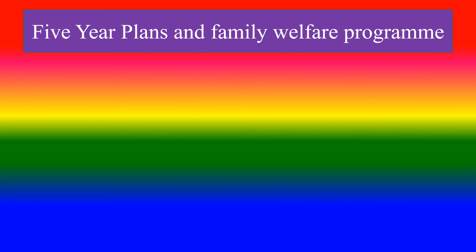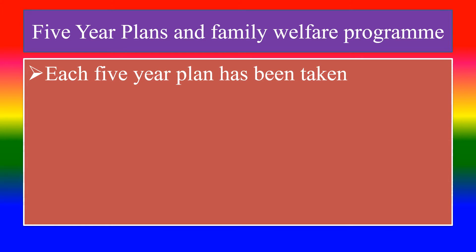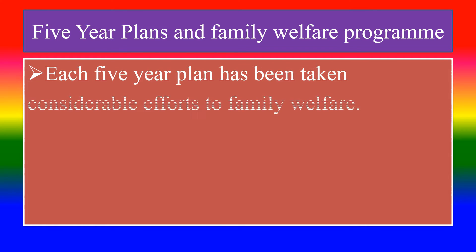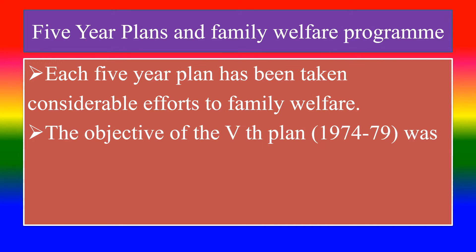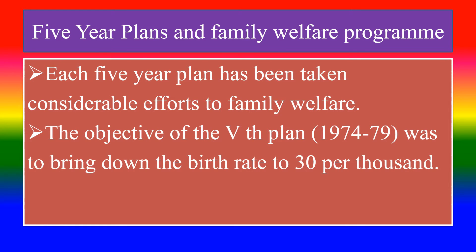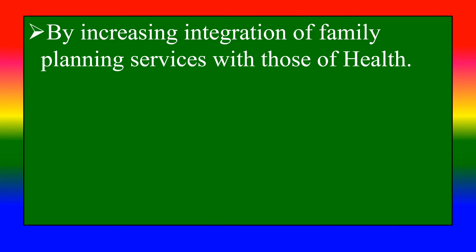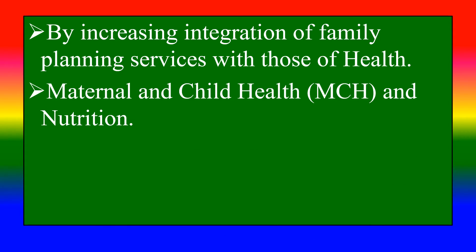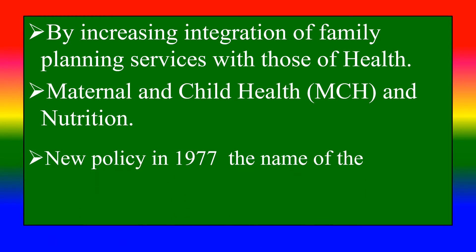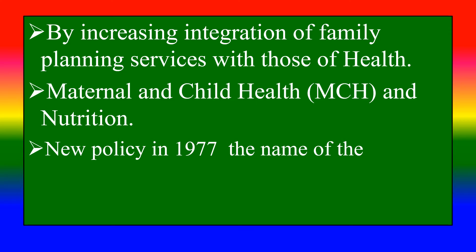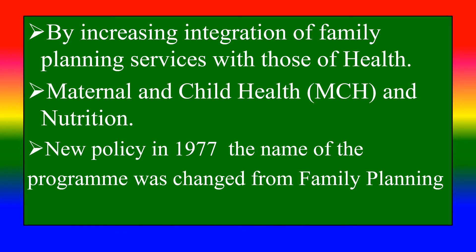Regarding five-year plans and the Family Welfare Program: each five-year plan has taken considerable efforts toward family welfare. The objective of the Fifth Plan was to bring down the birth rate to 30 per thousand by increasing the integration of family planning services with health, maternal and child health (MCH), and nutrition. In 1977, a new policy changed the name of the program from Family Planning to Family Welfare.